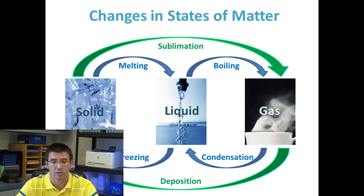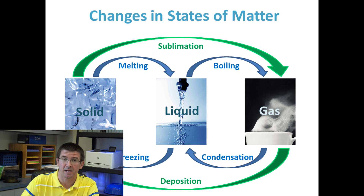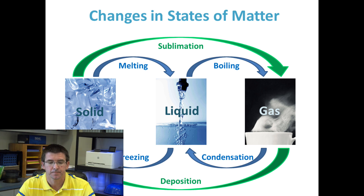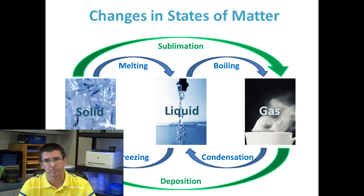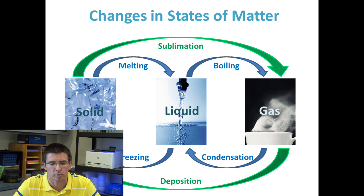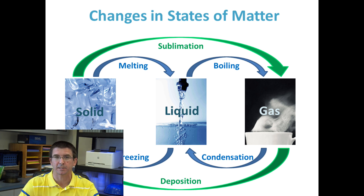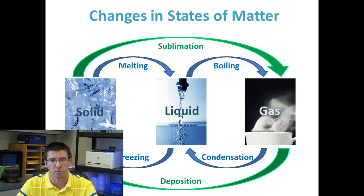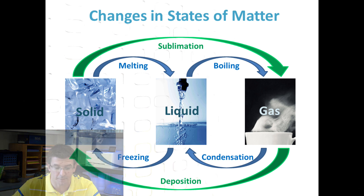If matter is going from a solid to a liquid we call it melting; liquid to a gas is boiling; gas back to a liquid is condensation; and liquid changing to a solid is freezing. There are also less common instances where matter goes directly from a solid to a gas — carbon dioxide is a great example: dry ice is solid carbon dioxide, but set on a counter it won't change to a liquid, it goes directly to a gas, which we call sublimation. The process going directly from gas to solid is called deposition.